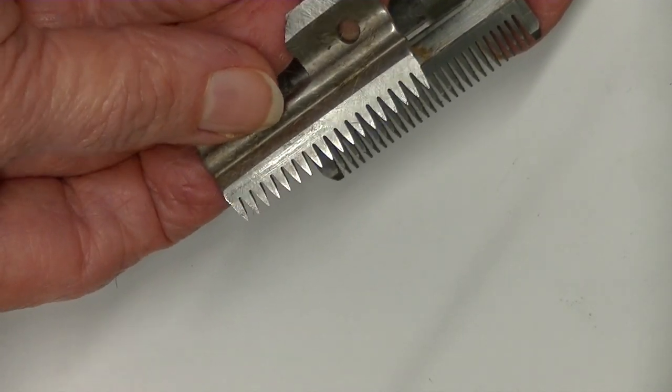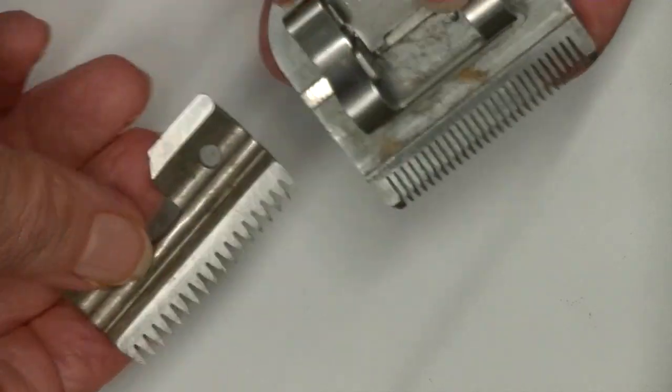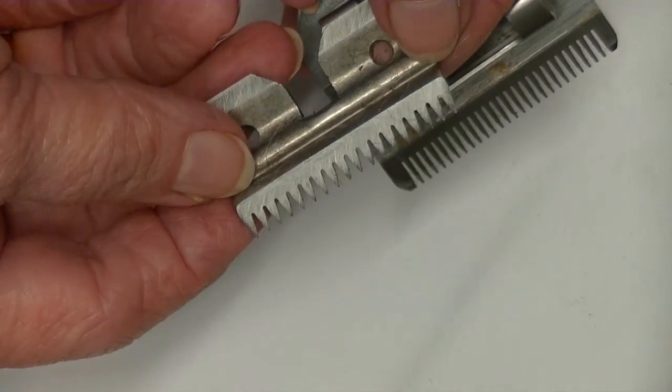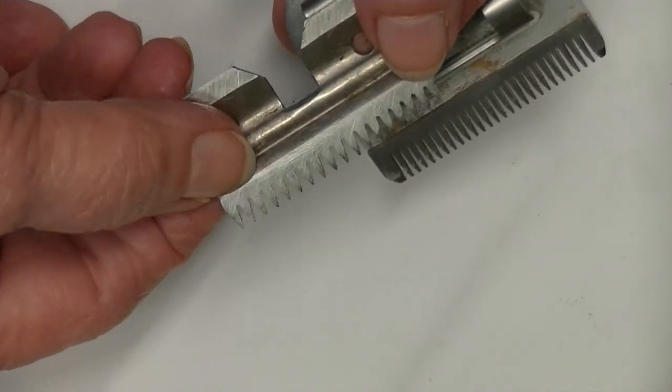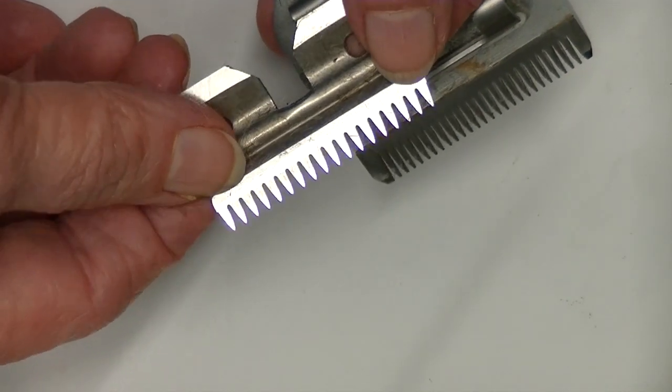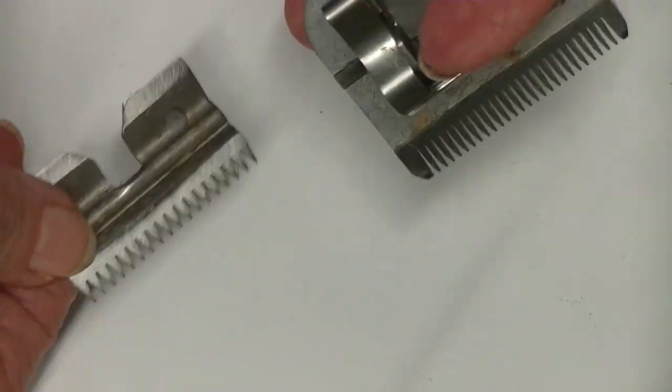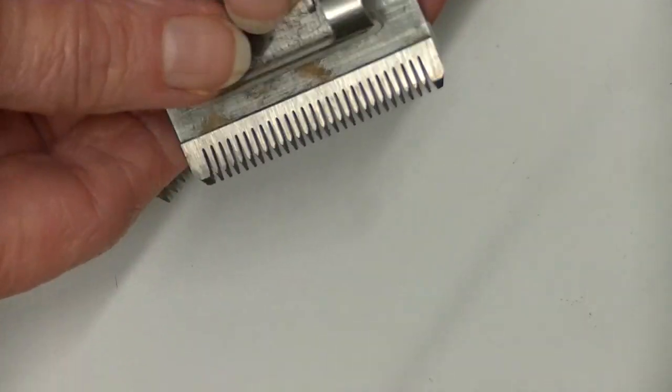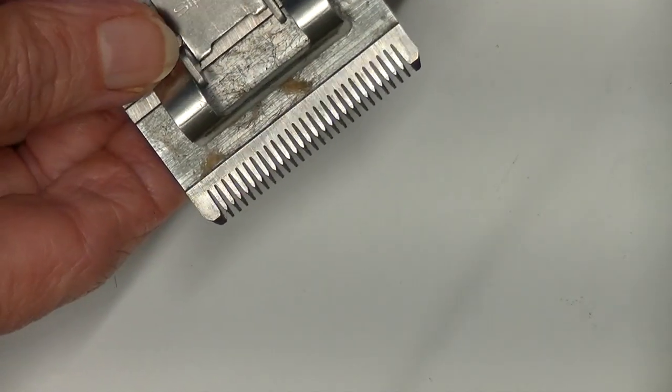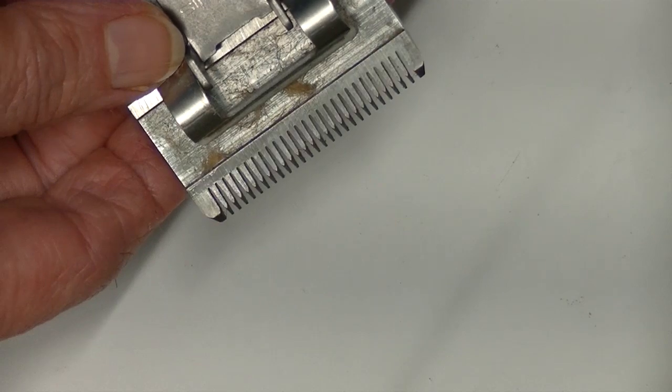Now these have not been rubbed on a rub block. This is the pattern you normally would get with blades that have been sharpened correctly, that are adjusted correctly, that had been used. And on this one, I'm seeing the little bit of a rub pattern.